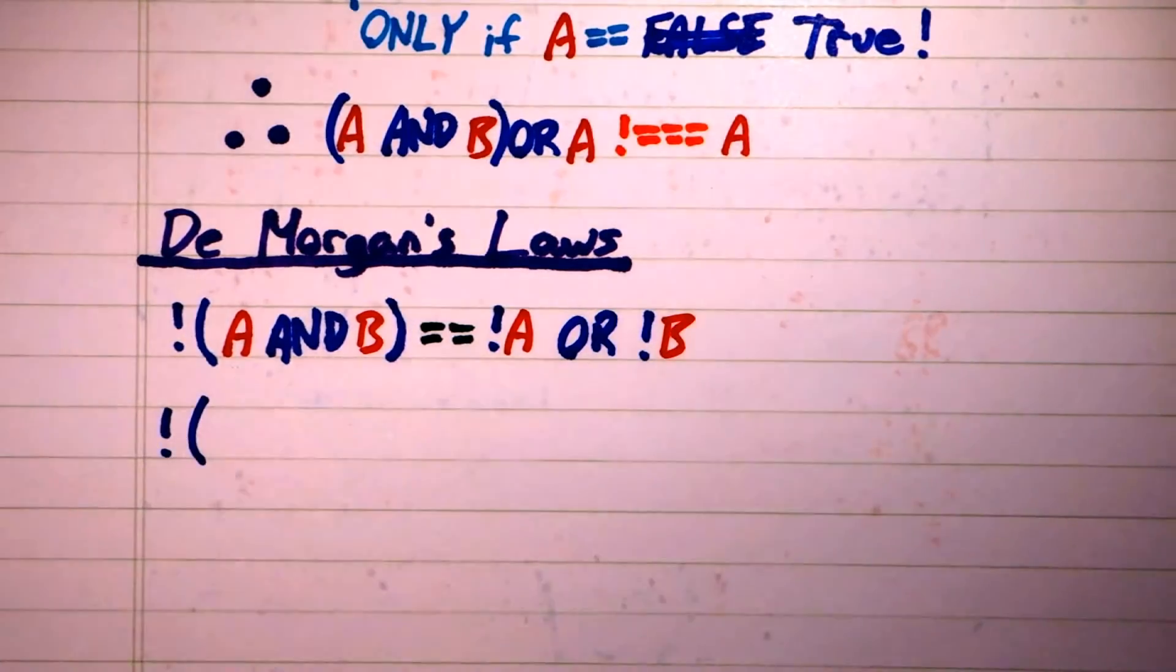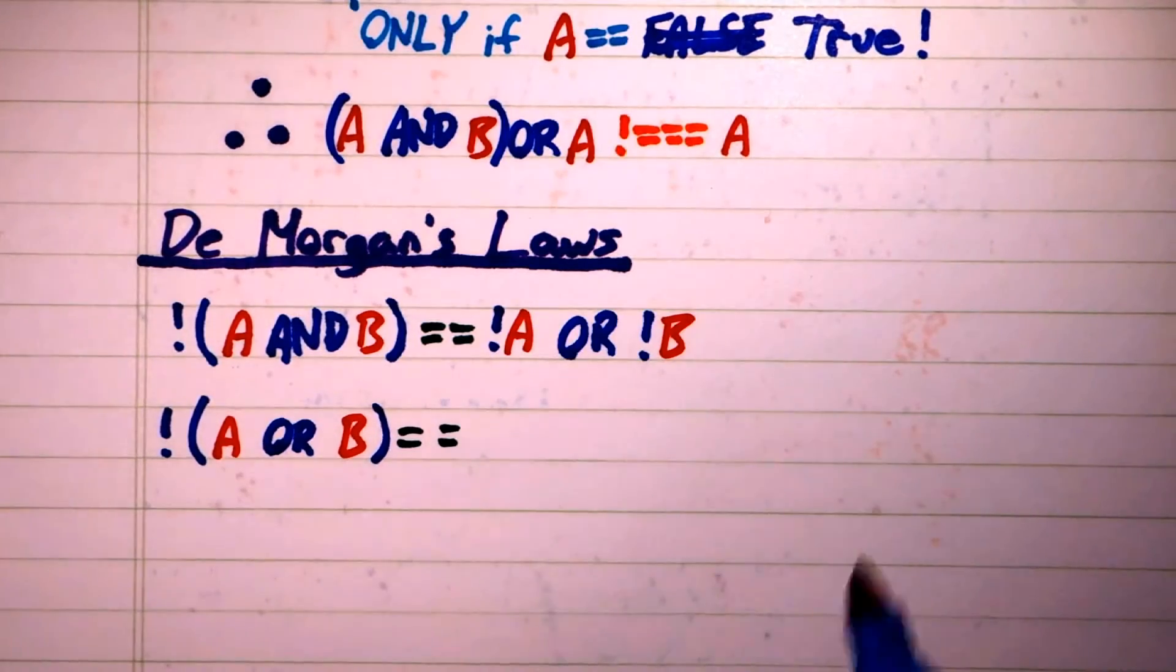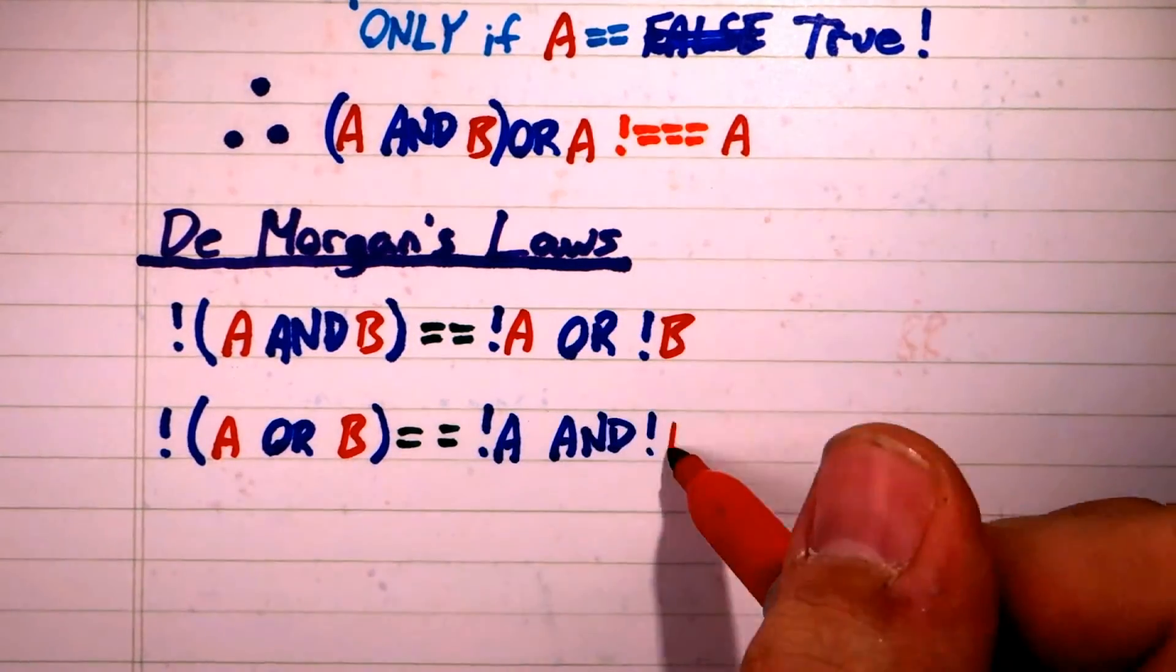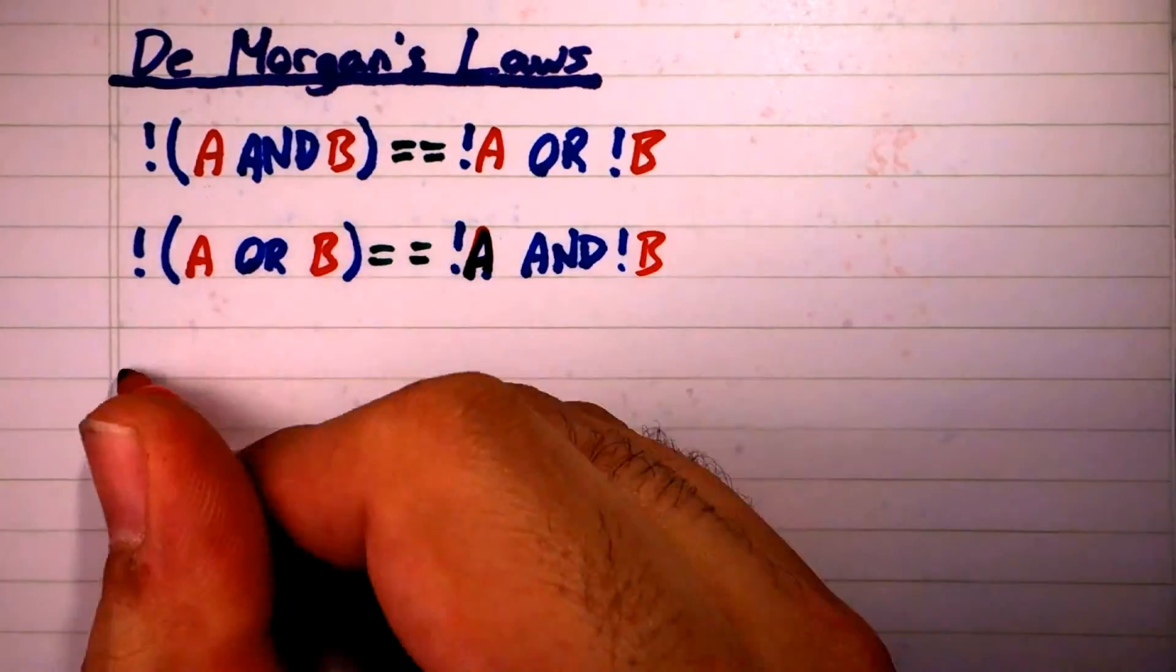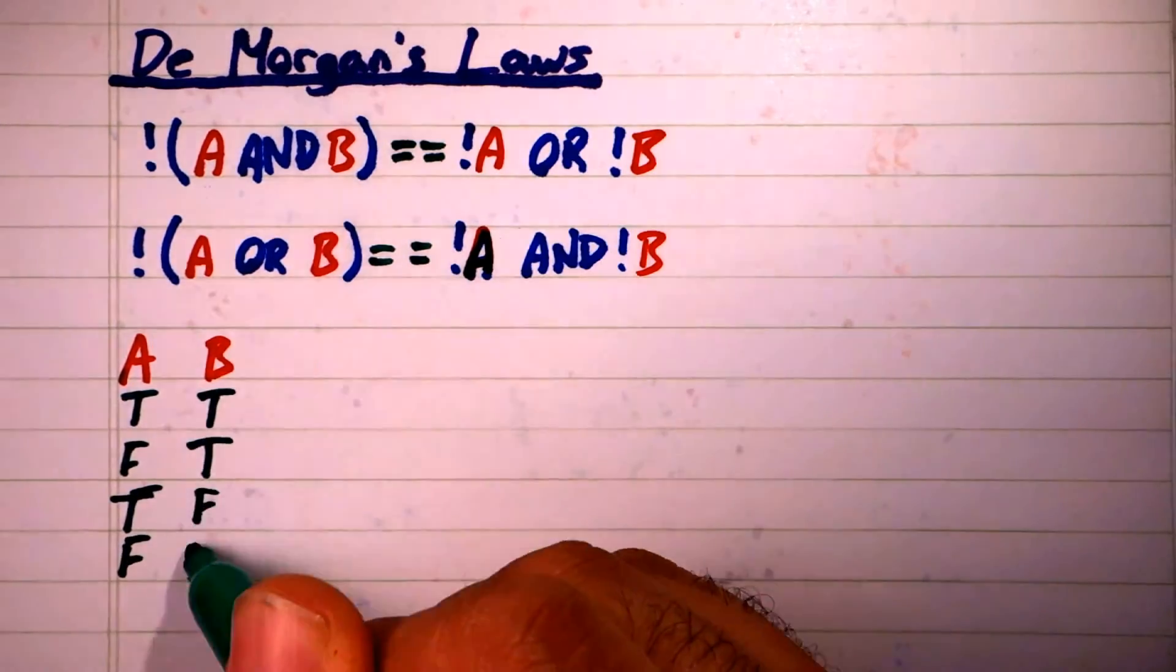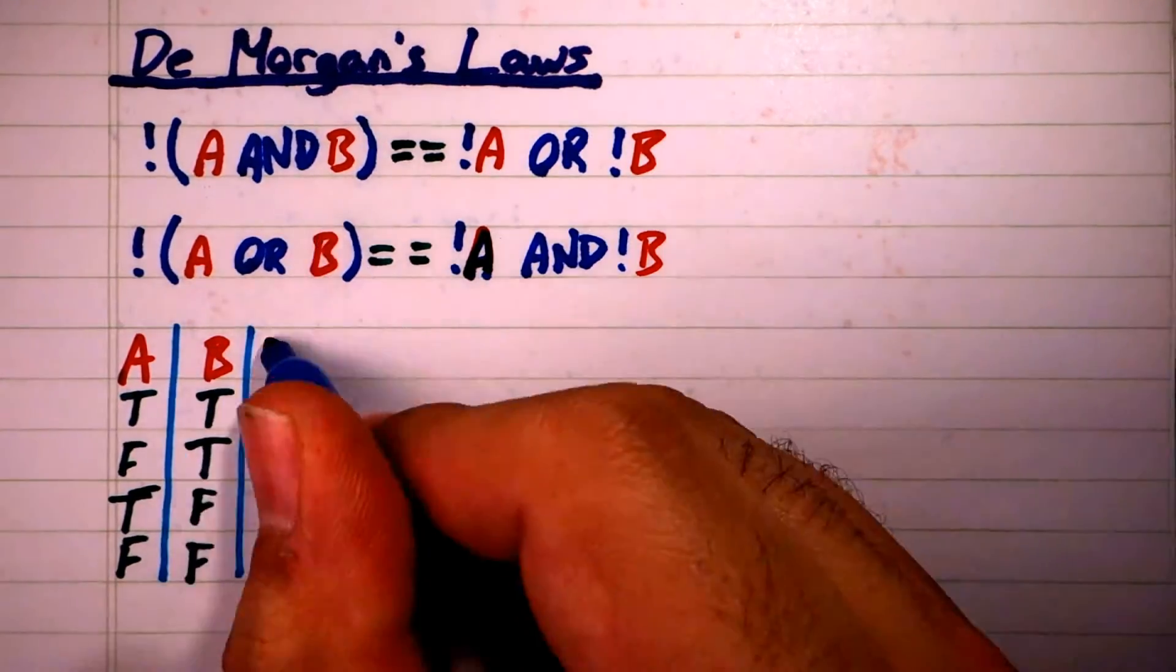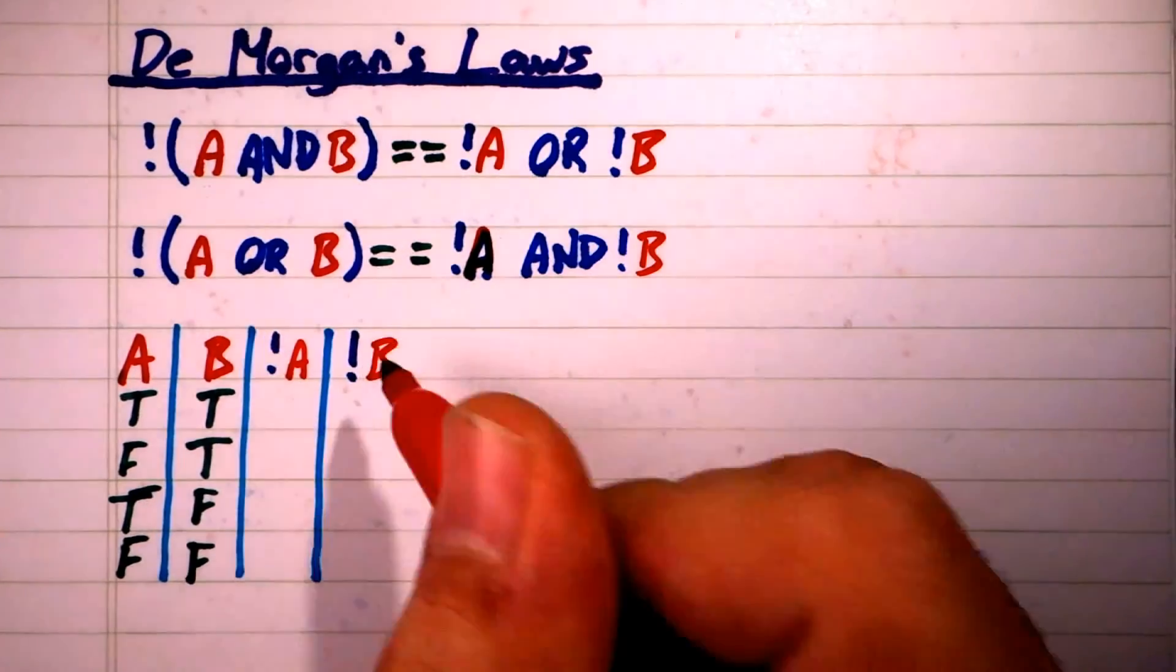And likewise, NOT A OR B equals NOT A AND NOT B. To see why these work, let's create a truth table. First, let's create NOT A AND NOT B.